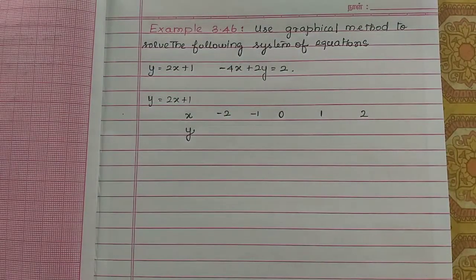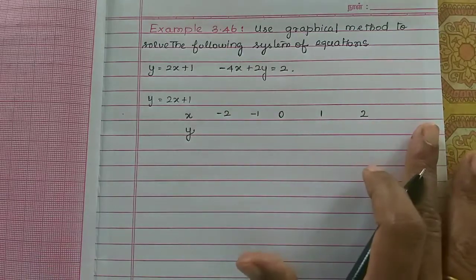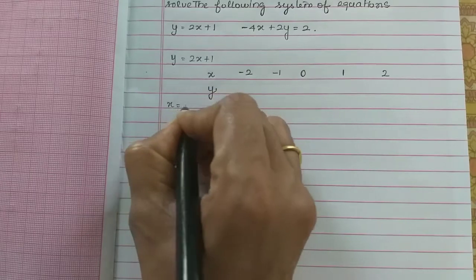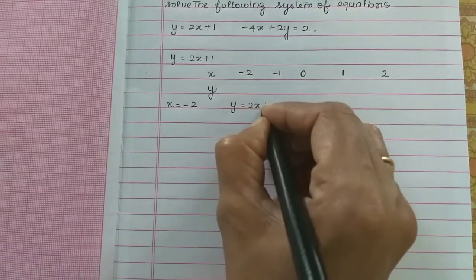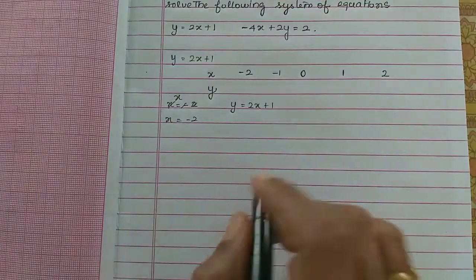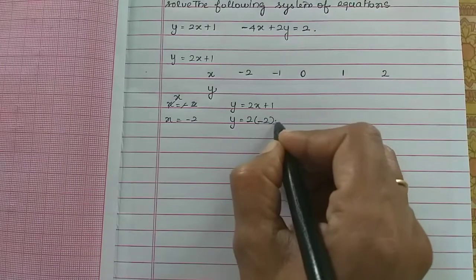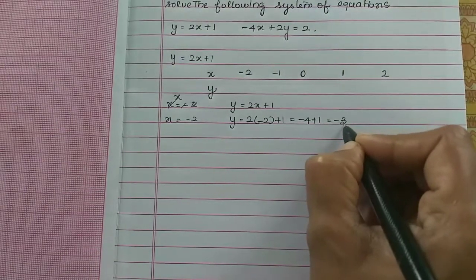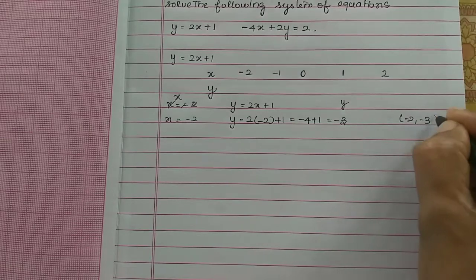In the book, the x values are 0, 1, 2, minus 1, and minus 2. We substitute each into the given equation. When x equals minus 2: y equals 2 into minus 2 plus 1, so 2 times minus 2 is minus 4, and minus 4 plus 1 is minus 3. So when x equals minus 2, y equals minus 3.